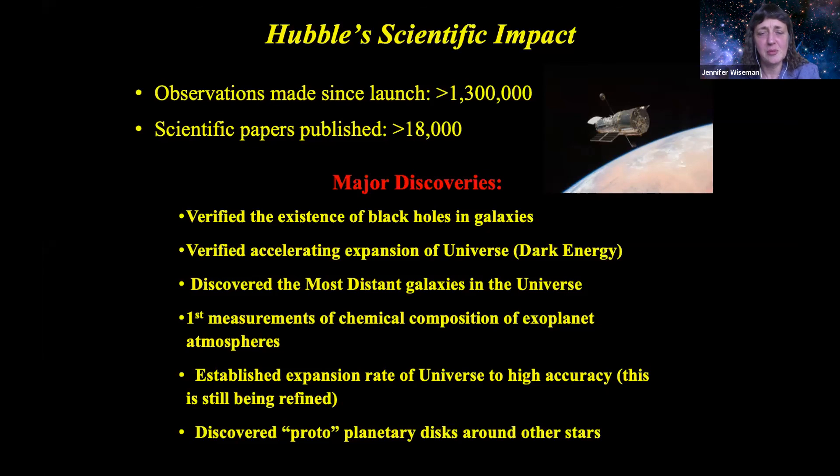The major discoveries from Hubble include verifying the existence of supermassive black holes in the cores of galaxies. Verifying that the universe is not only expanding, but refining the measurement of that expansion rate to much higher precision. And also in recent years, detecting along with ground-based telescopes that that expansion is accelerating. I'll say a little bit more about that. Seeing the most distant galaxies ever seen in the universe. Measuring for the first time the chemical composition of exoplanetary atmospheres and even discovering the concept that there are in fact protoplanetary disks around other stars as a common phase of star formation where planets are likely forming. And of course these regions are being studied heavily now with other telescopes as well.